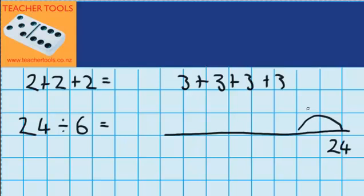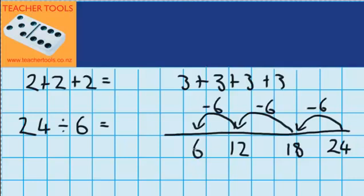So my first jump of 6 will take me back to 18. And then I'm going to jump back another jump of 6, which will take me to 12. And jump back another jump of 6, which will take me to 6. And another jump of 6, which will take me back to 0. So now I'm going to count up how many jumps I did. I did 1 jump of 6, 2 jumps of 6, 3 jumps of 6, 4 jumps of 6. So 24 divided by 6 equals 4.